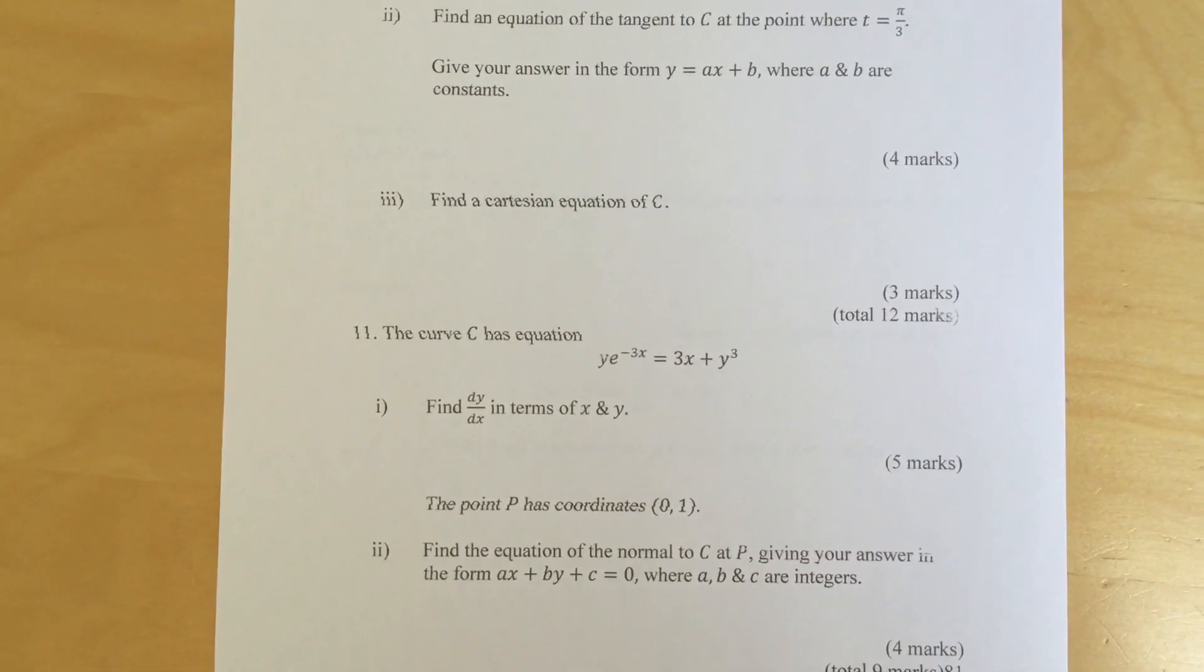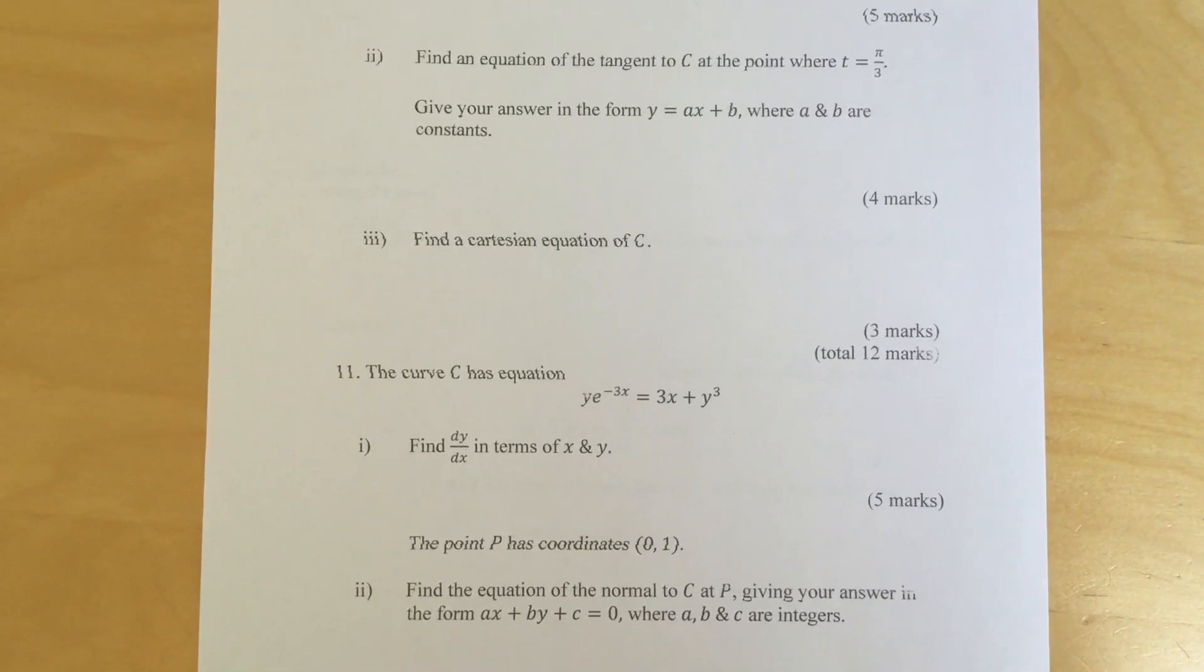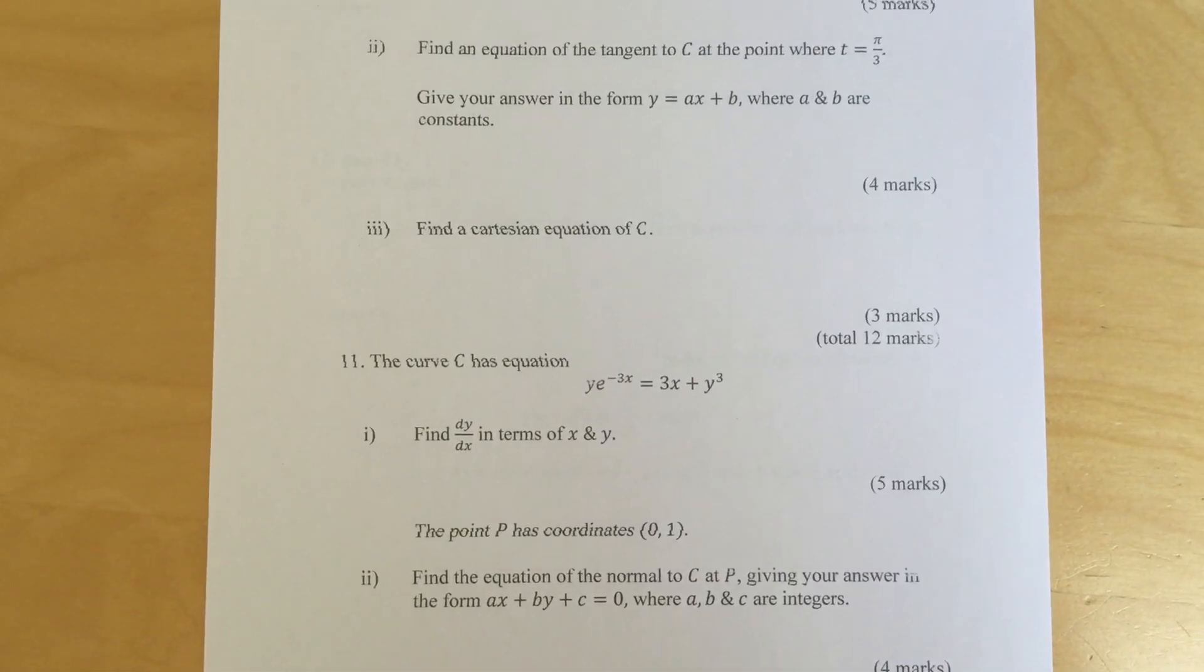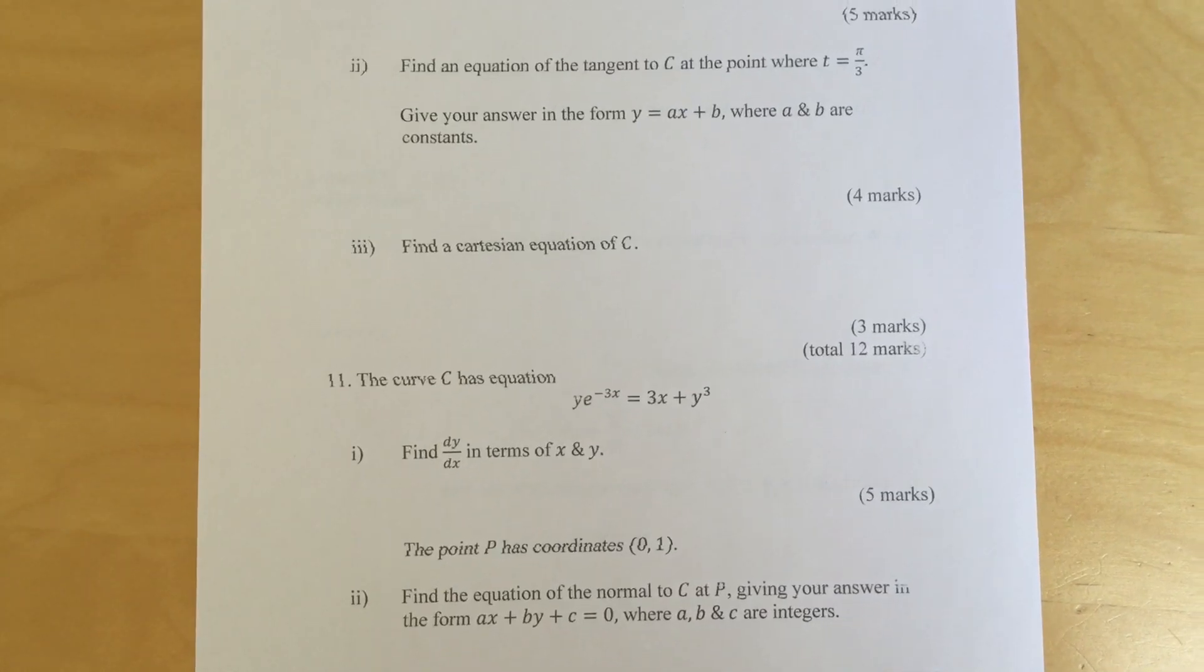Question 11: The curve c has equation y e to the minus 3x equals 3x plus y cube. Find dy dx in terms of x and y.